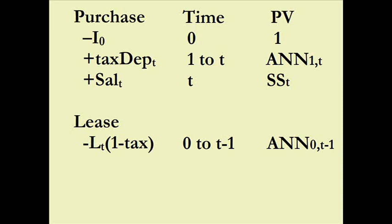Whereas if we're using straight-line depreciation for academic purposes, it would be at the end of the period, say one through T. For end-of-period payments we'd be using annuity one through T; for beginning-of-period payments we would be using an annuity zero through T minus one.